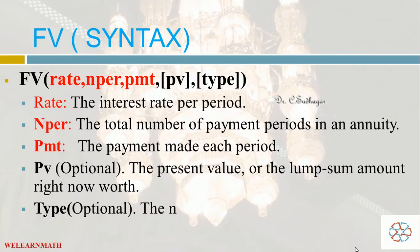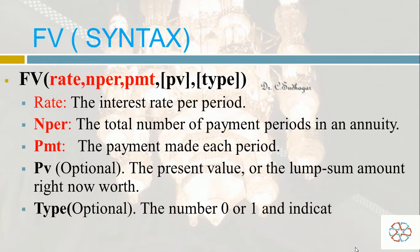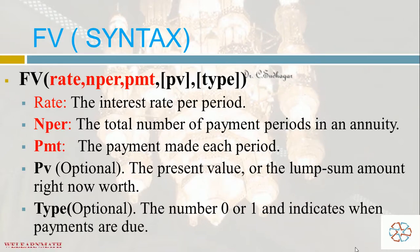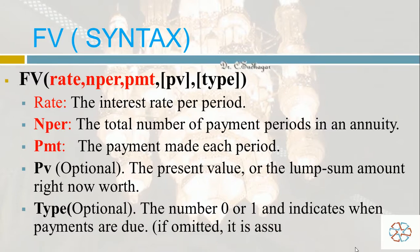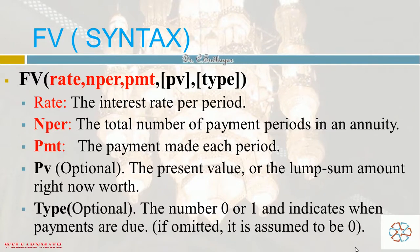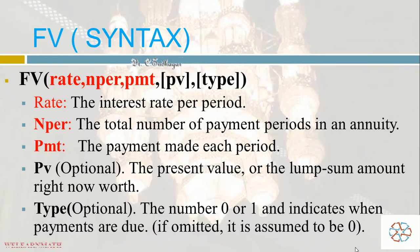The last parameter is Type, which has two options: 0 and 1. Usually it is left blank. 0 means there are no outstanding payments; 1 means there is one payment due.